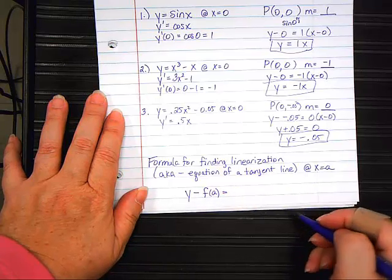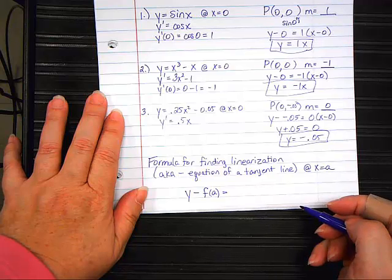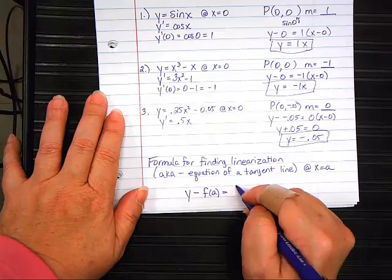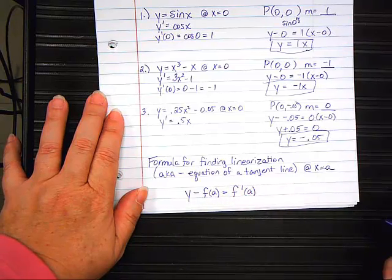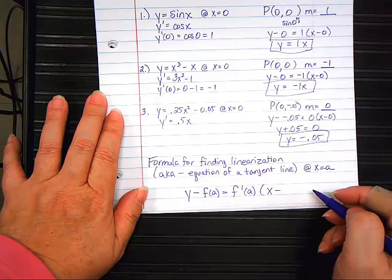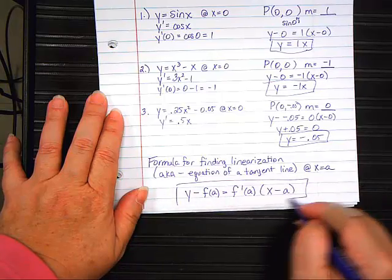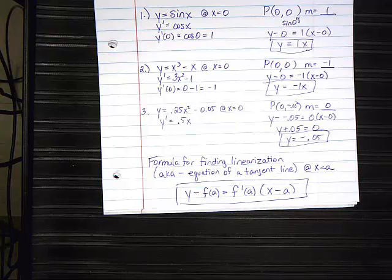Y minus what? What do we plug in right here every time we do this? The Y value. So, in terms of A, that would be F of A. Do y'all agree with that? The Y value of A equals, what goes next? The slope. How would we write that in terms of F and A? F prime of A, exactly. That's the slope. Because we took the derivative, plugged in A. And then parentheses X minus A goes there. Very good. There's the equation.